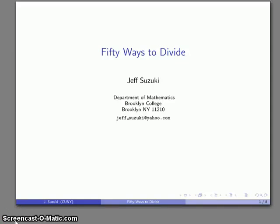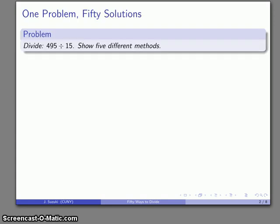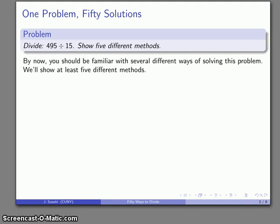All right, let's summarize all of our ways, or at least some of our ways, of doing division, and let's take a single division problem and see how many ways we can perform the problem. So here's 50 ways of dividing. So let's take the problem 495 divided by 15, and this time we'll show five different methods.